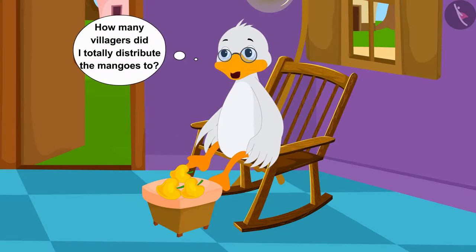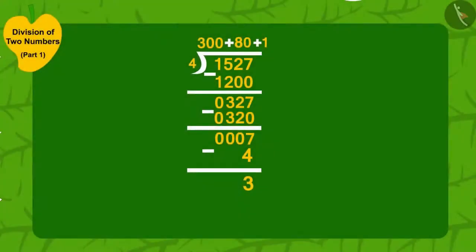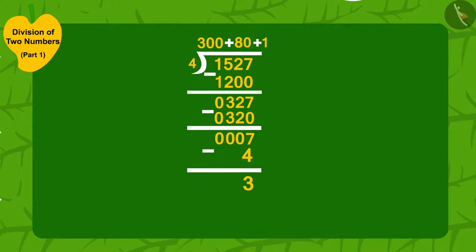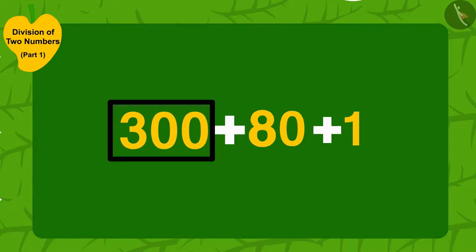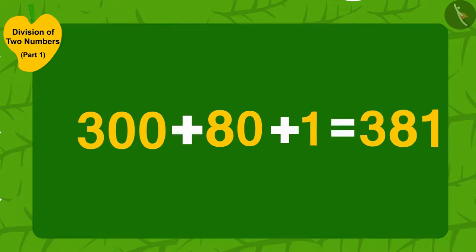But, how many villagers did I totally distribute the mangoes to? Uncle thought. Children, can you find out how many villagers did Uncle distribute four mangoes to? To find out, we just have to add the numbers written here. We add 300 plus 80 plus 1. So, we get 381.